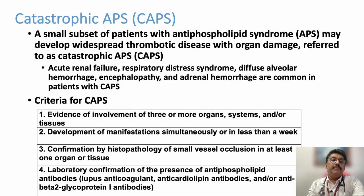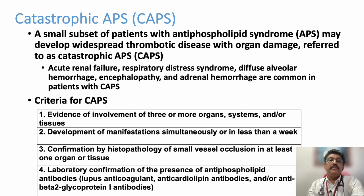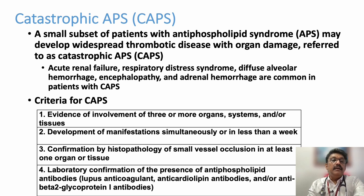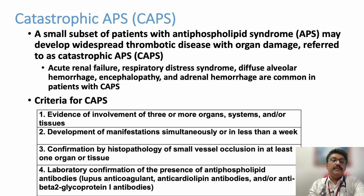Catastrophic APS is a sudden onset of APLA syndrome. Features include acute renal failure, respiratory distress syndrome, diffuse alveolar hemorrhages, encephalopathy, and adrenal hemorrhage. All these are features of catastrophic APS.